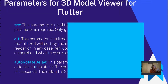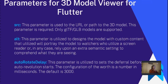We have parameters for the 3D Model Viewer for Flutter. The src parameter is used for the URL or path to the 3D model — this parameter is required, and only GLTF and GLB models are supported. The alt parameter is utilized to describe the model with custom text that will portray the model to users who use a screen reader or need additional semantic context to understand what they are seeing. We also have auto-rotate delay, which sets the delay before auto-rotation begins. The configuration is number of milliseconds — the default is 3000.